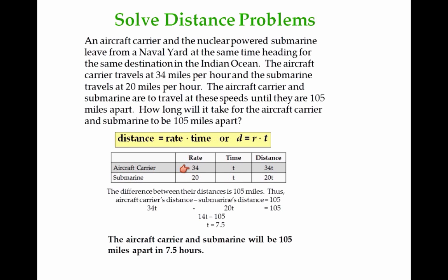The distance would be rate times time. The distance traveled by the aircraft carrier would be 34T. And the distance for the submarine would be 20T in terms of time. Here we have to set up the equation. The difference between their distance is 105 miles.